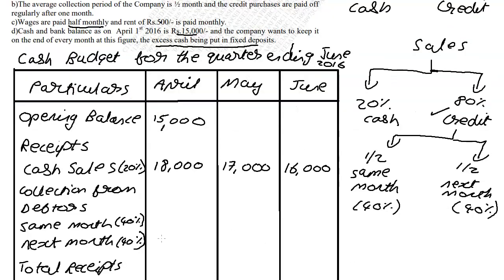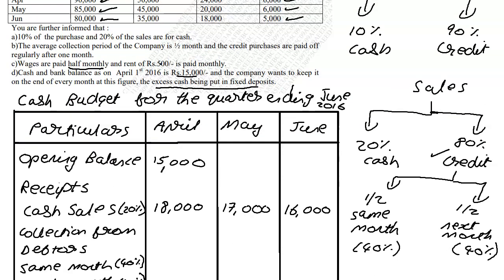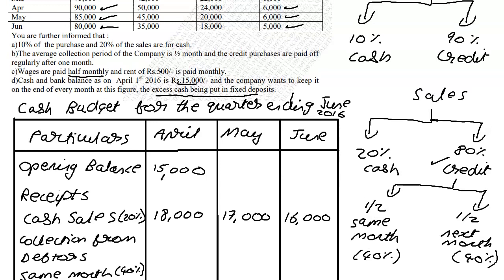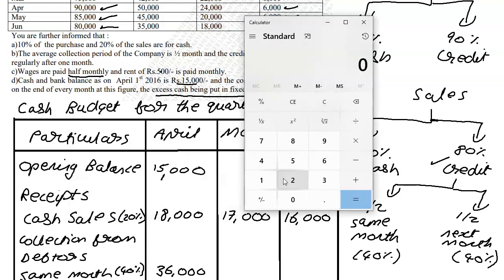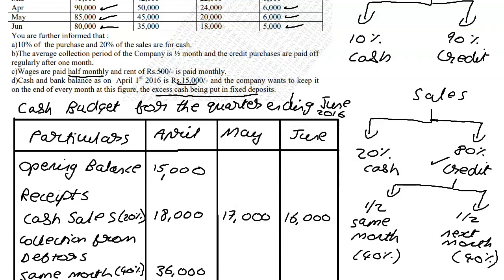Collection from debtors: same-month collection is 40% of that month's sales. So 40% of 90,000 = 36,000 for April; 40% of 85,000 = 34,000 for May; 40% of 80,000 = 32,000 for June.